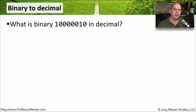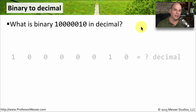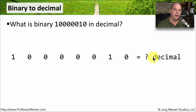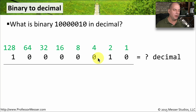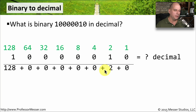Now that we have our conversion chart, let's perform our first calculation. The question is: what is binary 10000010 in decimal? To perform this calculation, we write down that number and add the values from our conversion chart right across the top. Every time there is a 1, we bring that number down to the bottom. Every time there's a 0, we bring a 0 down. The only place there is a 1 is under the 2 and under the 128.